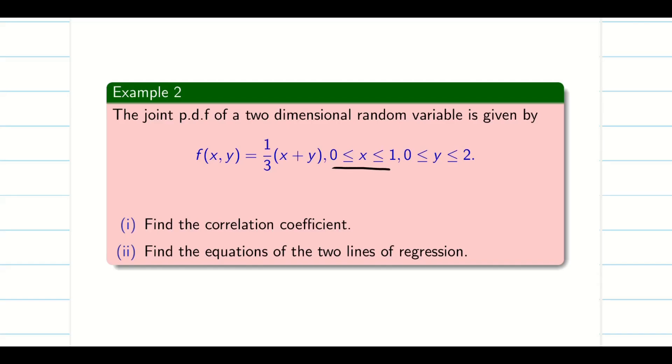Since the limits are between 0 to 1 for x and 0 to 2 for y, which is obviously a PDF, to find the regression lines we need r, byx, bxy, etc. First let us find the correlation coefficient from which we can easily find the regression lines.